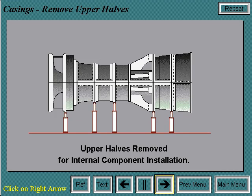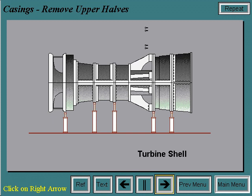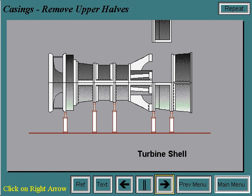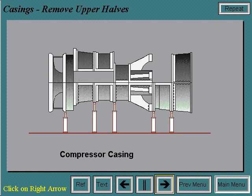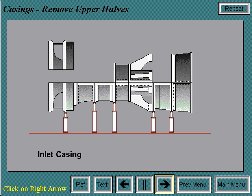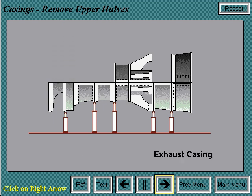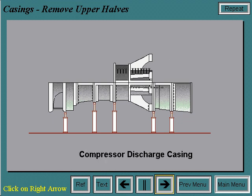The upper halves of the casings are removed to allow for internal component installation. All vertical and horizontal bolts are removed and the casings are lifted off one at a time in the following sequence: first the turbine shell, then the compressor casing, then the inlet casing, then the exhaust casing, and finally the compressor discharge casing.